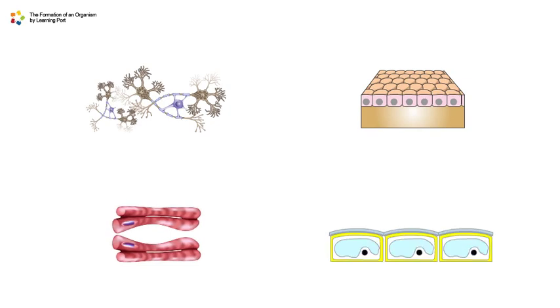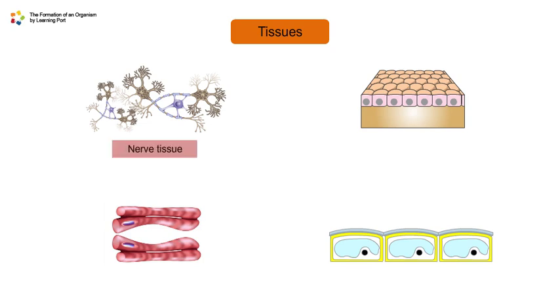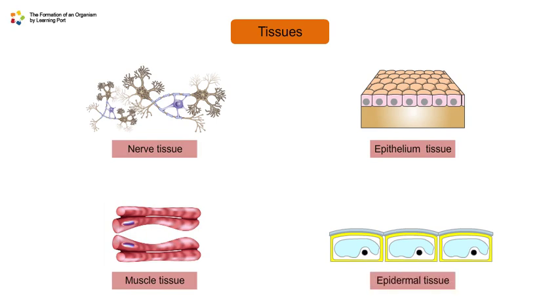A group of cells performing a specific function is called a tissue. Examples of tissues are nerve tissue, epithelium tissue, muscle tissue, and epidermal tissue.